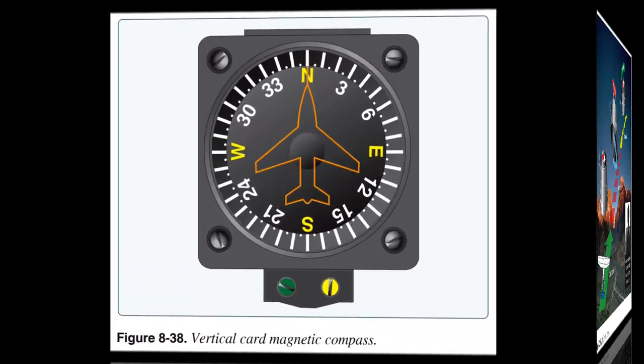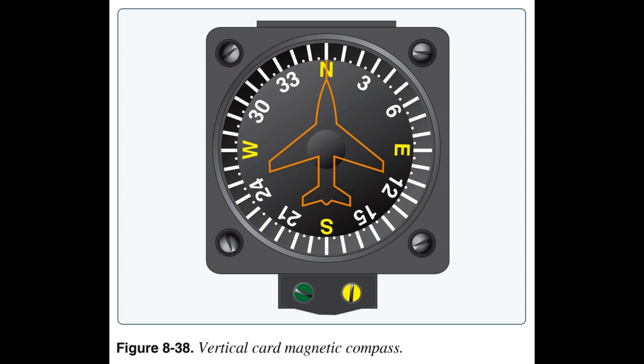The vertical card magnetic compass eliminates some of the errors and confusion encountered with the standard magnetic compass. The dial of this compass is graduated with letters representing the cardinal directions, numbers every 30 degrees, and tick marks every 5 degrees. The dial is rotated by a set of gears from the shaft-mounted magnet, and the nose of the symbolic aircraft on the instrument glass represents the lubber line for reading the heading. When starting a turn from a northerly heading, the compass lags behind the turn; when starting a turn from a southerly heading, the compass leads the turn. In the case of a vertical card magnetic compass, flux from the oscillating permanent magnet produces eddy currents in a damping disc or cup, and the magnetic flux produced by the eddy currents opposes the flux from the permanent magnet and decreases the oscillations.